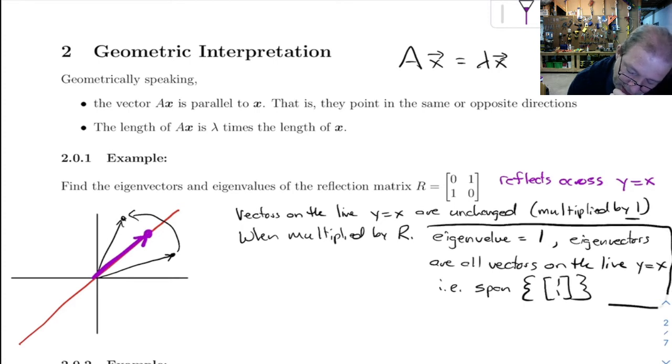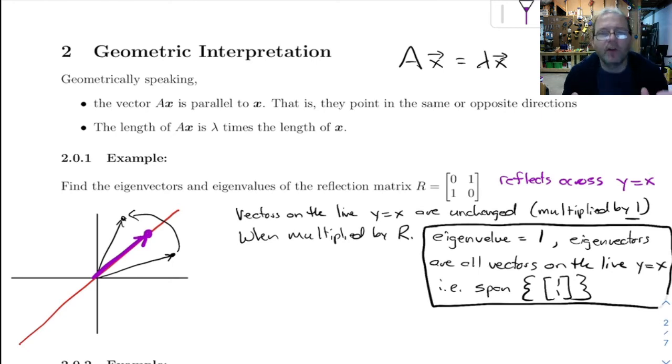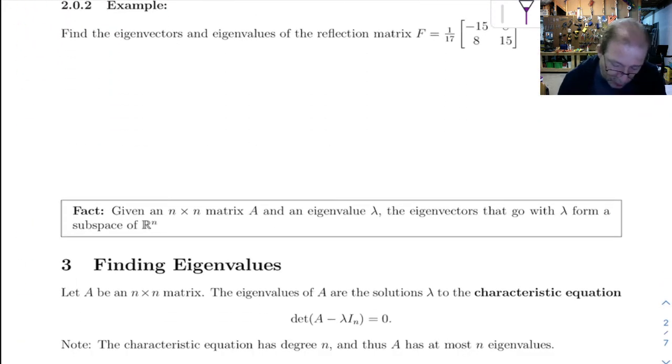So that's one eigenvalue-eigenvector pair. Now notice we don't just get one eigenvector, we get infinitely many of them. That actually foreshadows this down here.